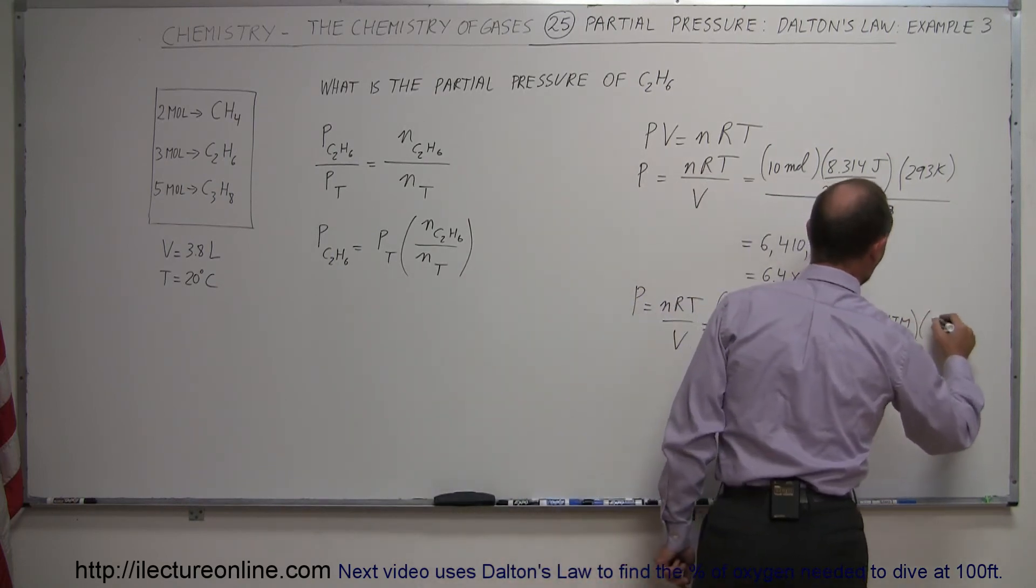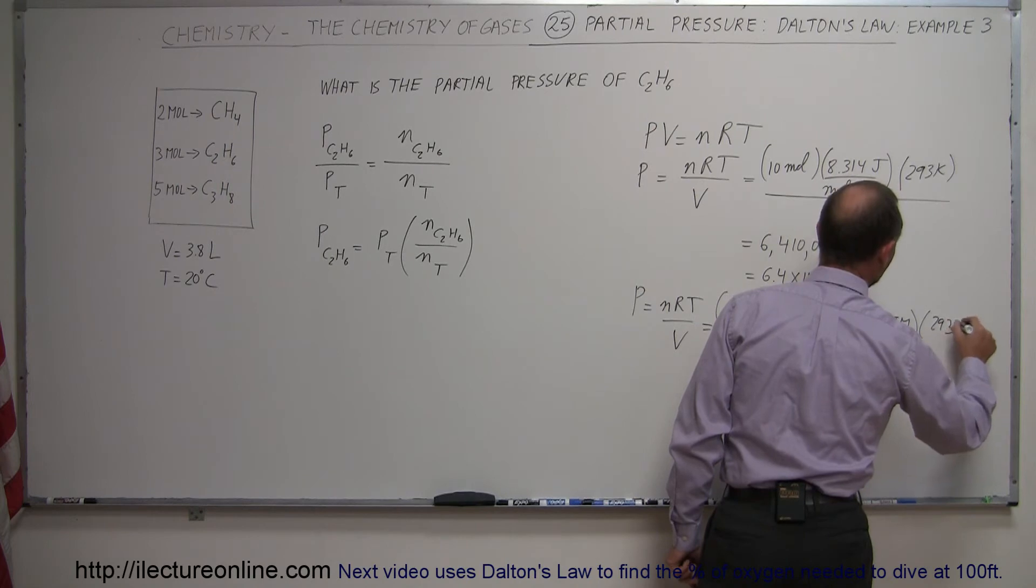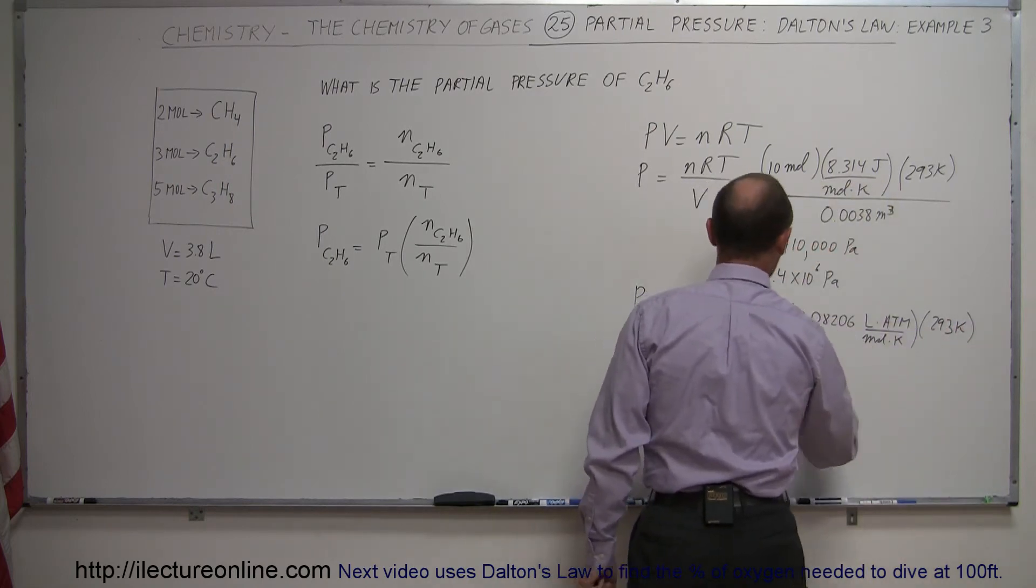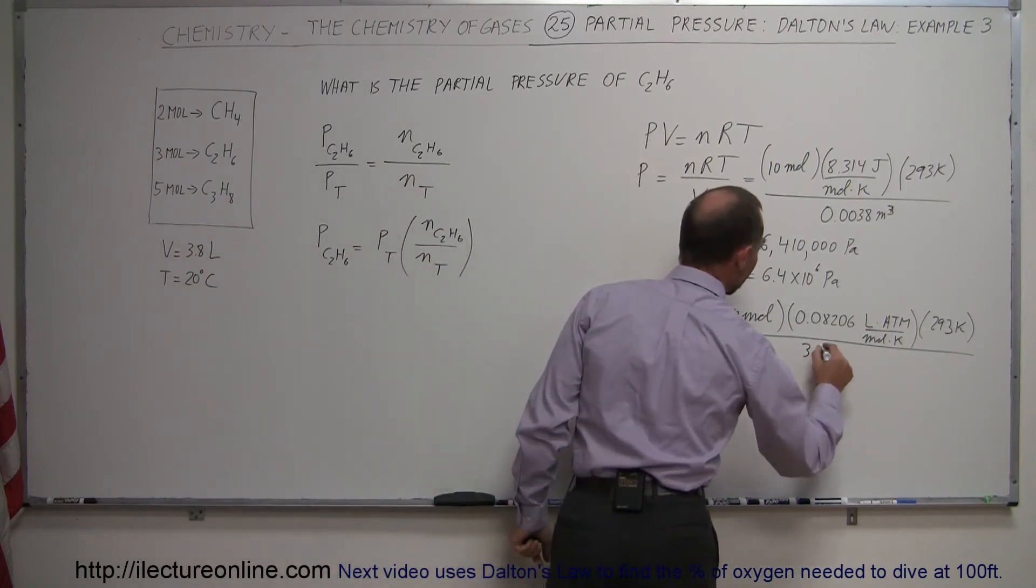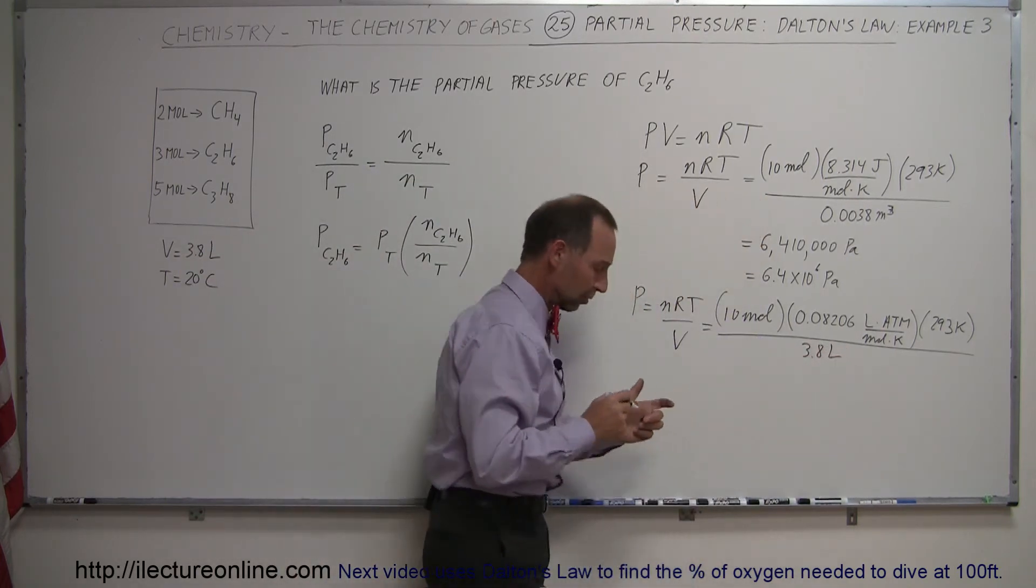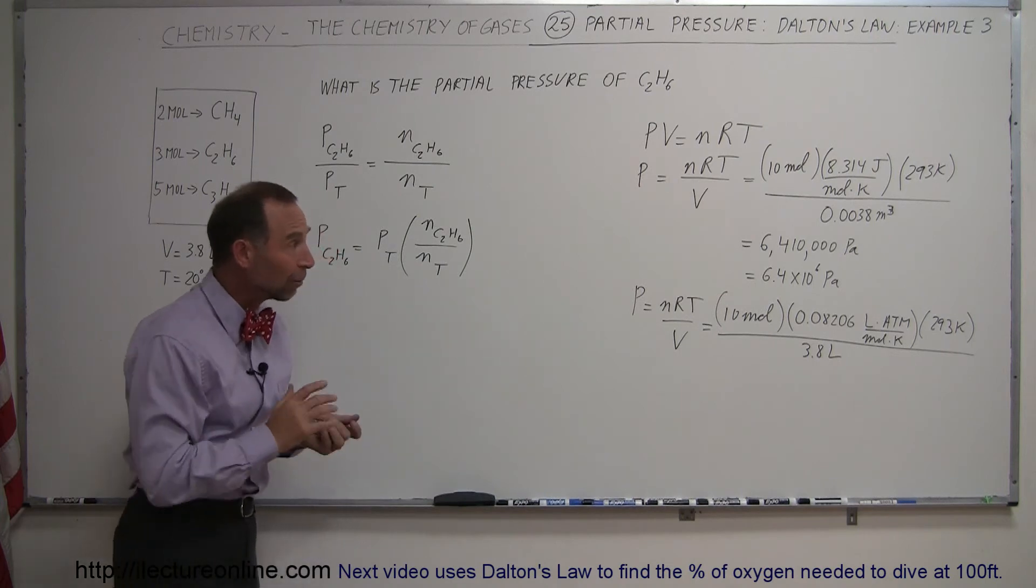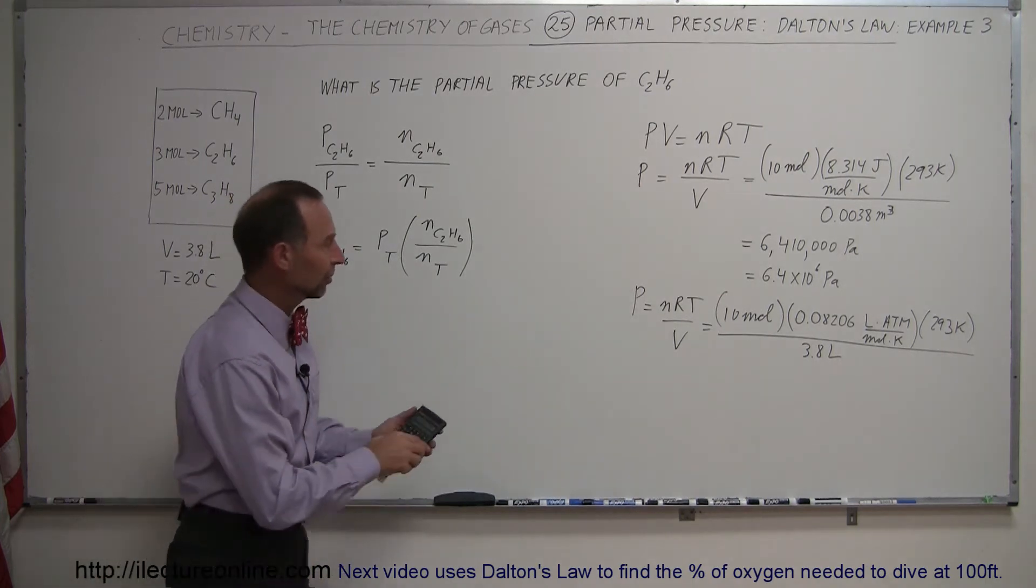The temperature is still 293 Kelvin. Divide the whole thing by the volume. Now instead of writing the volume in cubic meters, we can write it in liters, 3.8 liters. So this will give us the answer in atmospheres rather than Pascals.